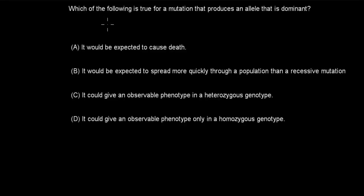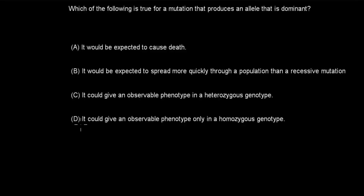The first question is: which of the following is true for a mutation that produces an allele that is dominant? A. It would be expected to cause death. B. It would be expected to spread more quickly through a population than a recessive mutation. C. It would give an observable phenotype in the heterozygous genotype. D. It would give an observable phenotype only in homozygous genotypes. Pause the video and attempt the question.